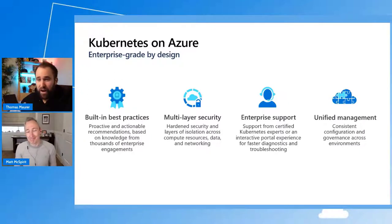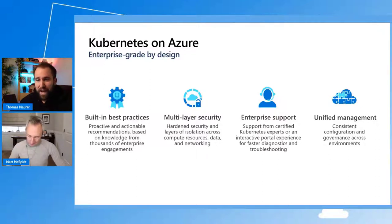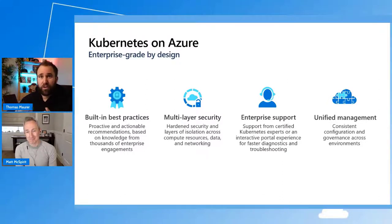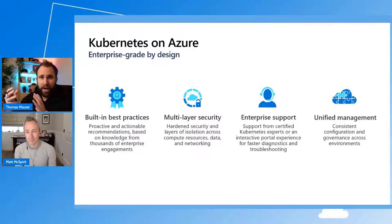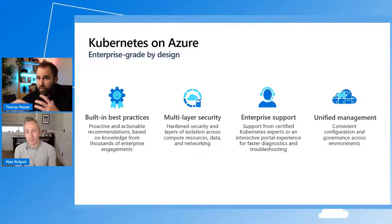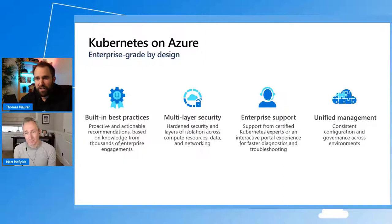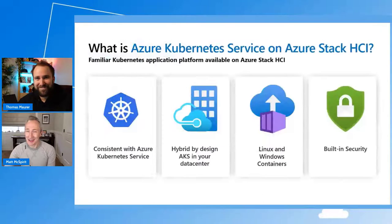Customers really love our AKS service running in Azure. However, some of them tell me they have data sovereignty challenges, network latency challenges, or don't have good internet connectivity in some locations — branch offices, data center locations, or factories. They ask how they can use that AKS service in their own data center. And that is what you're here to talk about today.